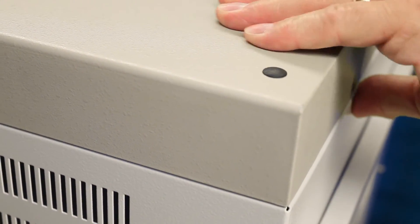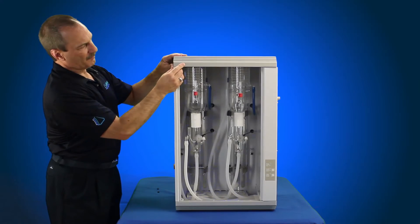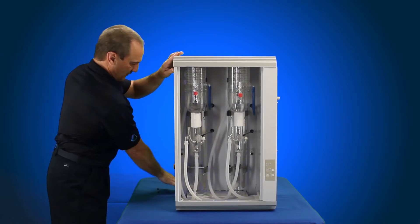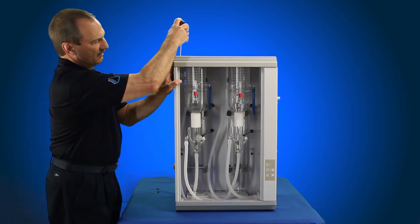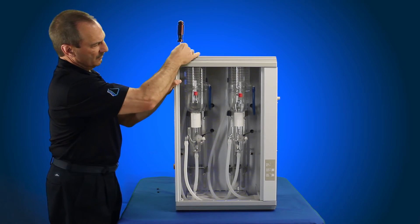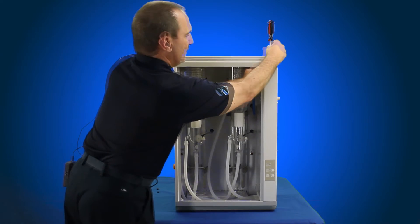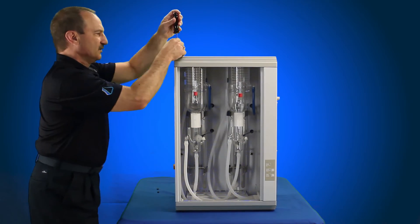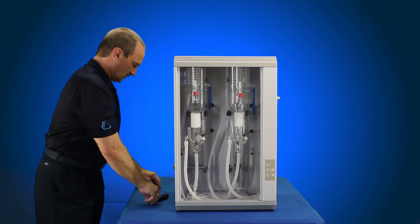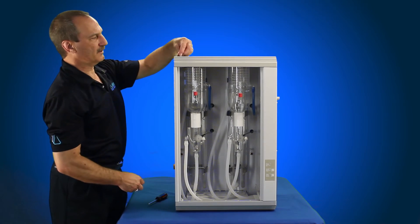Once you've located those, you just slide it back until the front matches. Take your Phillips head screwdriver, you're going to tighten one side down. Once they're tight, put your blanking plugs back in.